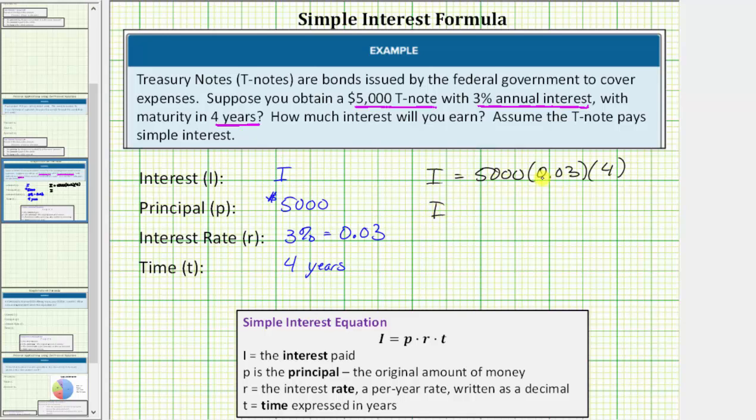So I is equal to, multiplying from left to right, 5,000 times 0.03 is equal to 150. 150 times four is equal to 600, which means you earn $600 in interest.